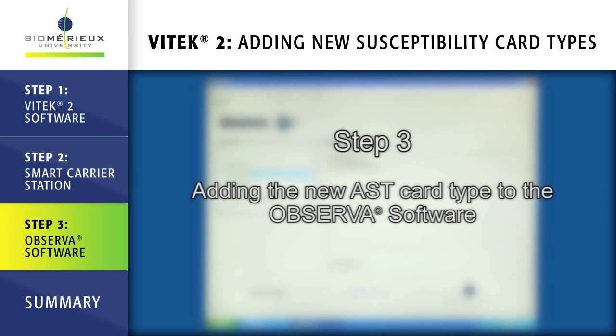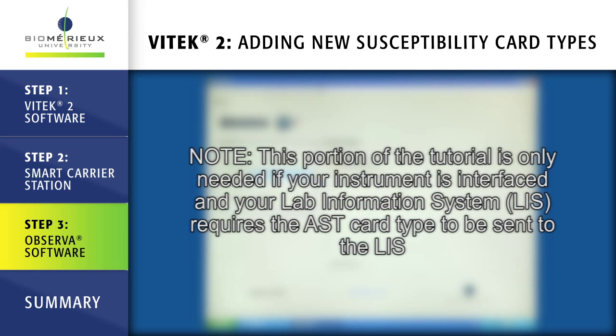Step 3: Adding the new AST card type to the Observa software. Note: this portion of the tutorial is only needed if your instrument is interfaced and your lab information system requires the AST card type to be sent to the LIS.